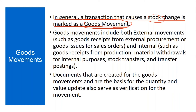Goods movements include both external and internal movements. External movements include goods receipts from external procurement — when you receive material from a vendor after issuing a PO to the supplier — and goods issues for sales orders, where you deliver your product to the customer.